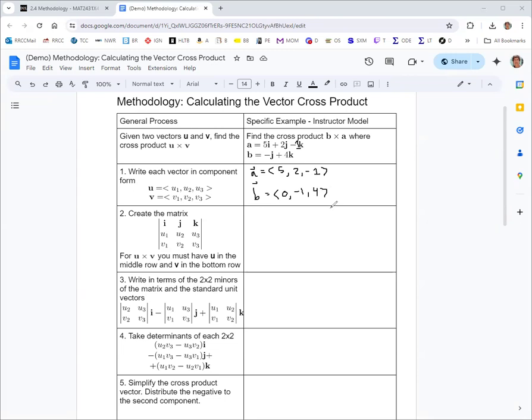We set up a matrix and the first row of the matrix is these basis vectors ijk. Then the second row is the first vector that's mentioned, so the cross product's not commutative. The order does matter, so the one on the left in the cross product will go with the middle row, which is b.